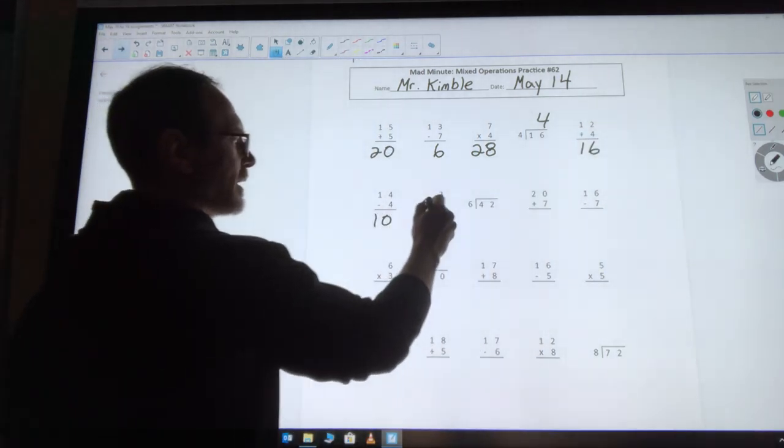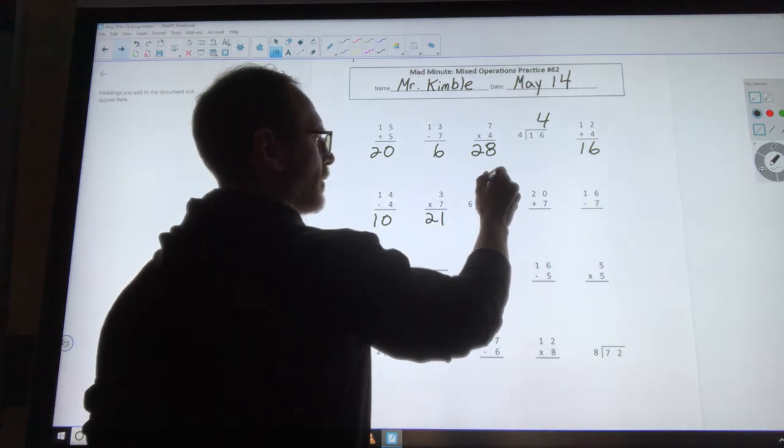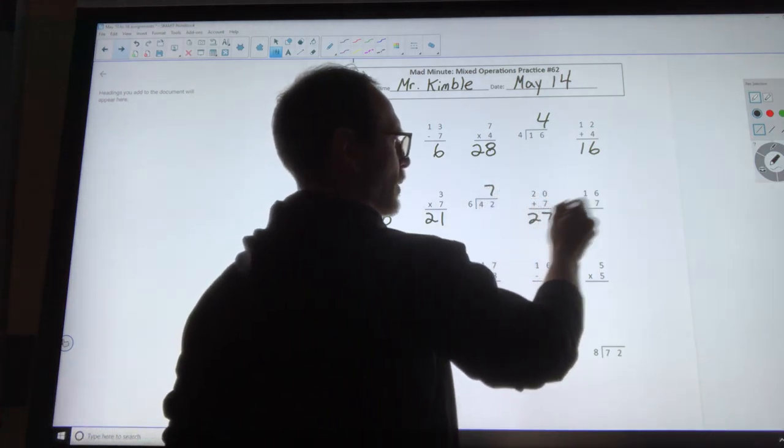12 plus 4 is 16. 14 minus 4 is 10. 3 times 7 is 21. 42 divided by 6 is 7.